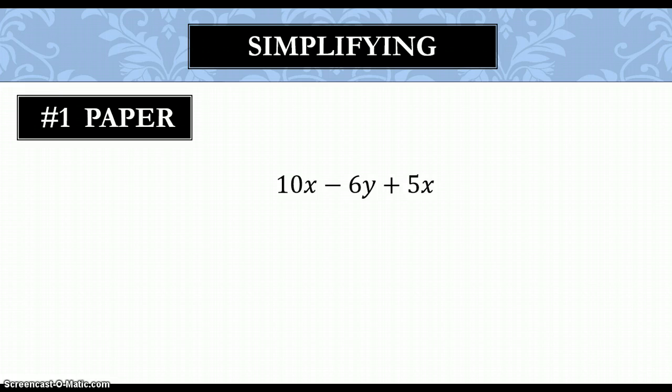So, we start by looking at our first term, 10x. We circle that. And then we look around to see if we have anything else that has an x on it. And we do. 5x. So, we're going to go ahead and circle that as well. Now, we combine our like terms. We have 10x plus 5x. That's going to give us 15x. And we cannot combine the minus 6y with anything.